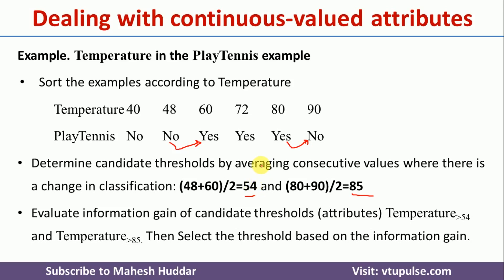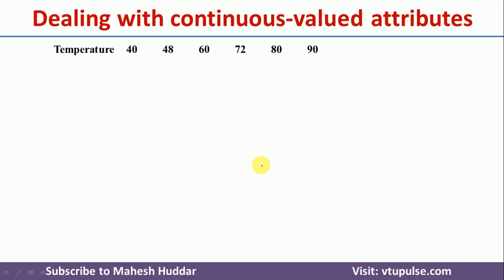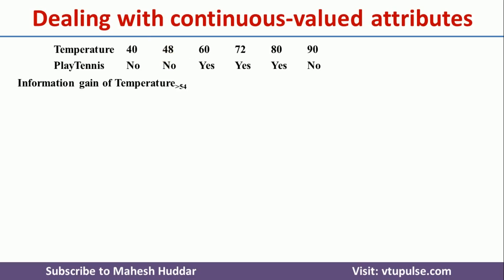Now we will discuss how to calculate the information gain of every threshold and which one to select as the boundary. While calculating the information gain, the very first thing we need to do is calculate the entropy of the whole dataset, and then the entropy of individual attribute values, and then find the information gain. So first we will consider the temperature divided using 54 as the boundary.